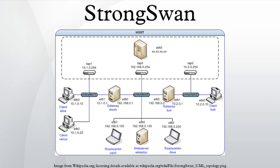A StrongSwan VPN client can act as a TNC client and a StrongSwan VPN gateway as a policy enforcement point, and optionally as a co-located TNC server. The following TCG interfaces are supported: IF-IMC 1.2, IF-IMV 1.2, IF-PEP 1.1, IF-TNCCS 1.1, IF-TNCCS 2.0, IF-M 1.0, and IF-MAP 2.0.